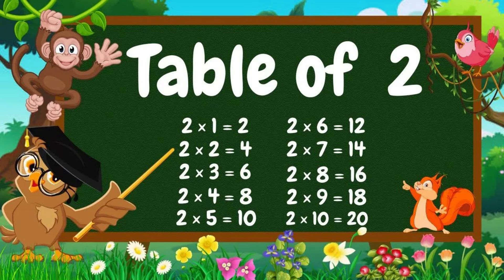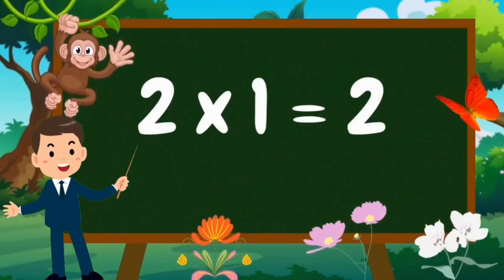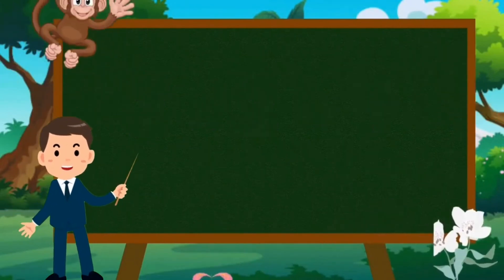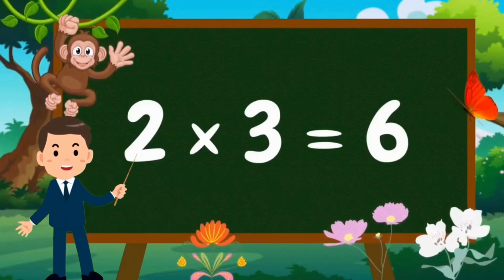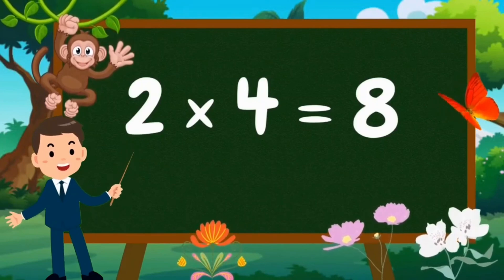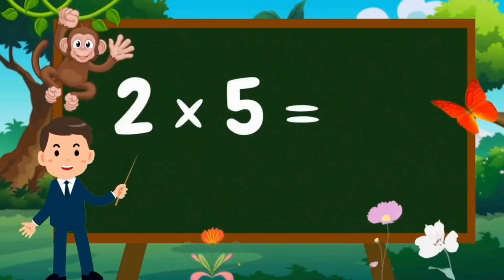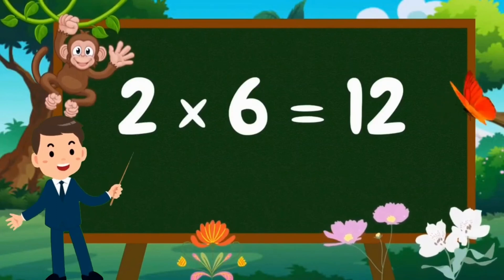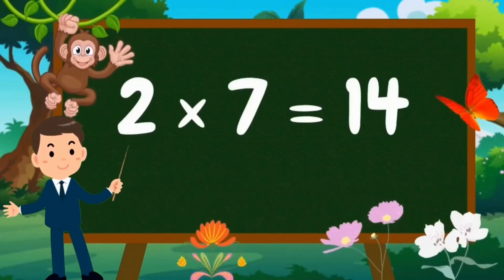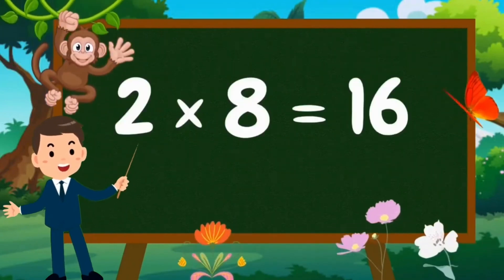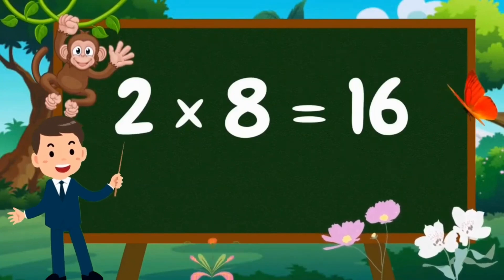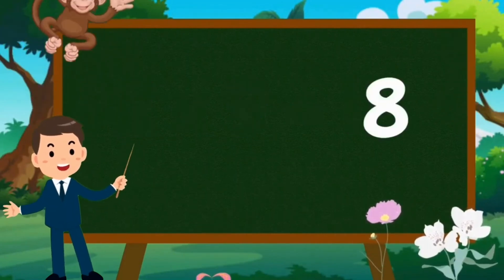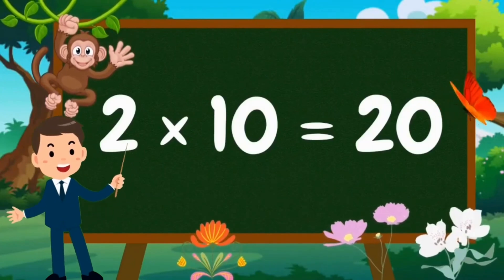Table of Two. Two ones are two. Two twos are four. Two threes are six. Two fours are eight. Two fives are ten. Two sixes are twelve. Two sevens are fourteen. Two eights are sixteen. Two nines are eighteen. Two tens are twenty.